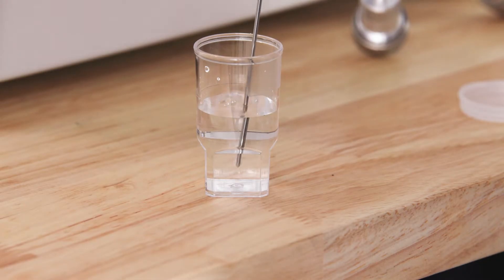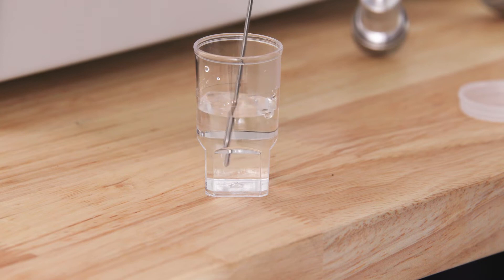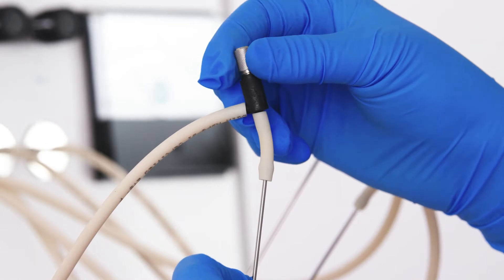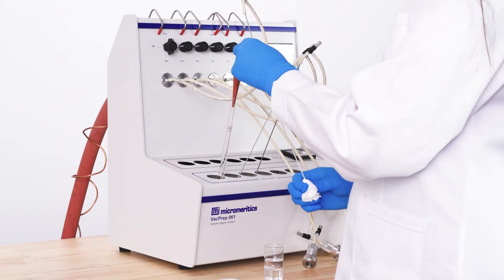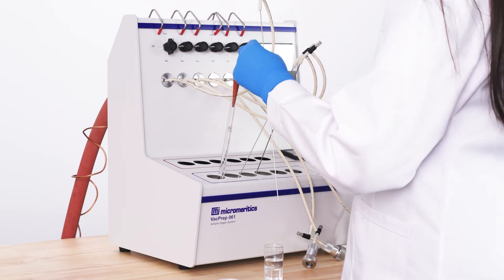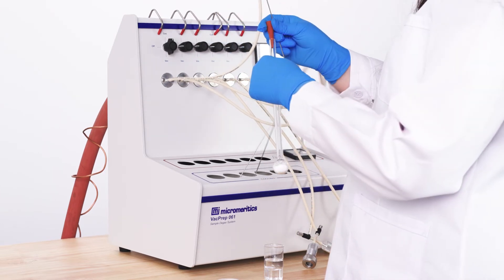Then submerge the tip of the gas delivery tube into water to check the flow of gas. Bubbles should rise from the tube indicating that gas is flowing. Turn the knob at the top of the tube to adjust the flow. Wipe the tip of the tube clean and insert it into the sample tube.